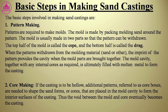The basic steps involved in making sand castings are: pattern making. Patterns are required to make molds. The mold is made by packing molding sand around the pattern. The mold is usually made in two parts so that the pattern can be withdrawn. The top half of the mold is called the cope, and the bottom half is called the drag. When the pattern is withdrawn, the imprint provides the cavity when the mold parts are brought together. The mold cavity is ultimately filled with molten metal to form the casting.